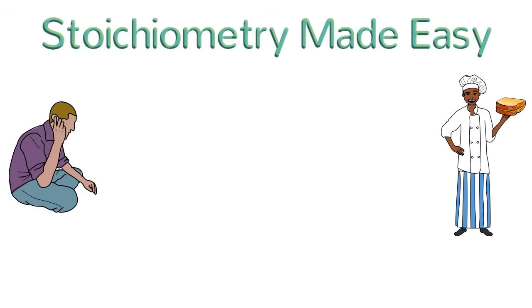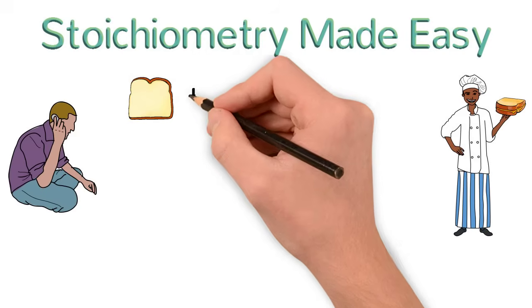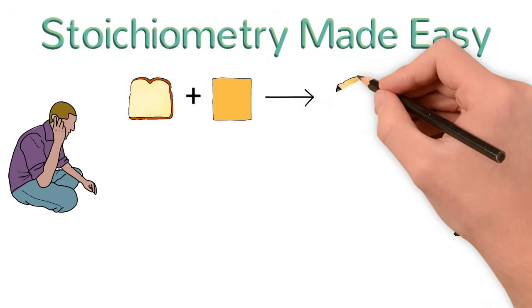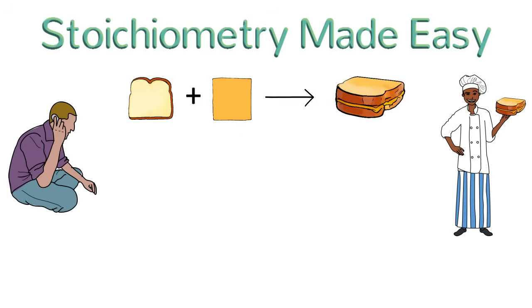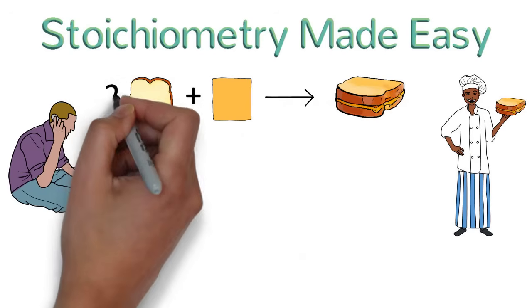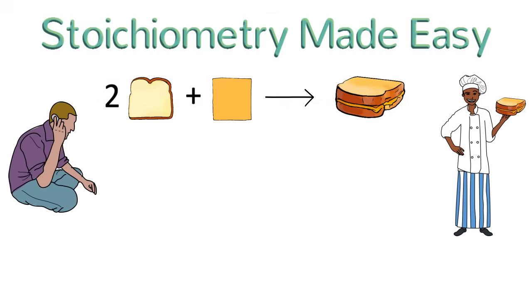And he says, dude, chill. It's real easy. Just take some bread, put some cheese in the middle, heat it up, and you got yourself some grilled cheese. How much bread? How much cheese, you ask? Two slices of bread and one slice of cheese is all you need to make one sandwich. So, there you go. You've got your recipe.